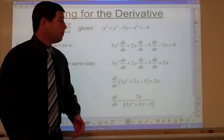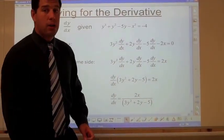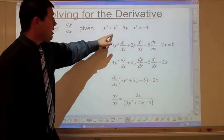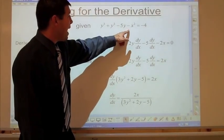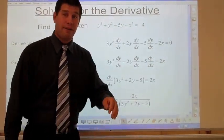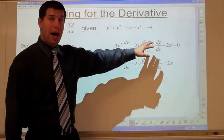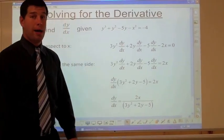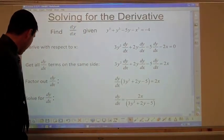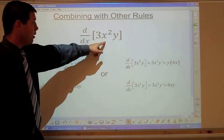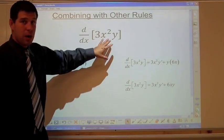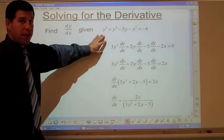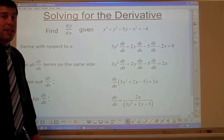Now we get into more practical uses. We have the equation y cubed plus y squared minus 5y minus x squared equals negative 4. Clearly there is no easy way to set this equal to y, so we have to use implicit differentiation.